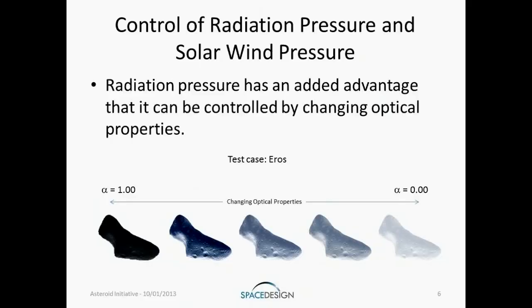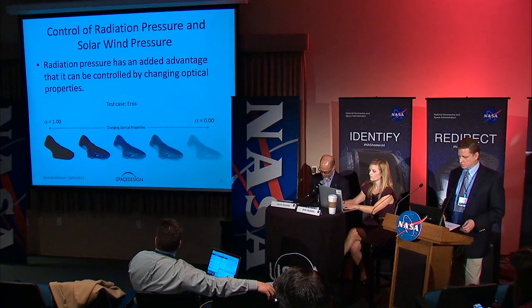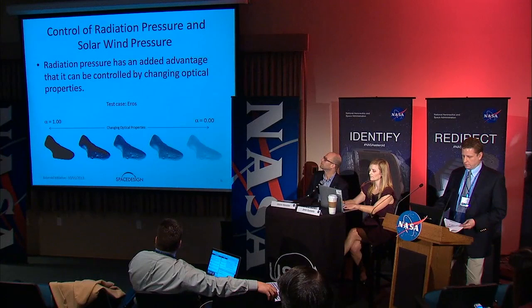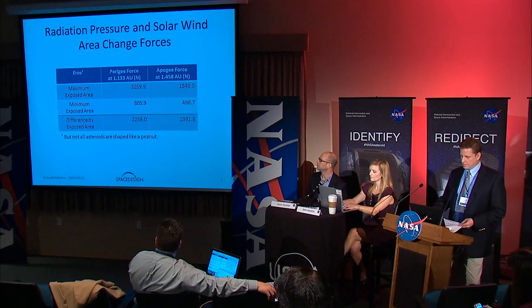Radiation pressure also has an added advantage in that it can be controlled by changing the optical properties of the surface. A black surface has a solar absorptance of 1.0; changing to a specular mirrored surface gives an absorptivity of 0. By doing that you can effectively change the magnitude of the radiation pressure by a factor of 2 — a second way to control the force.